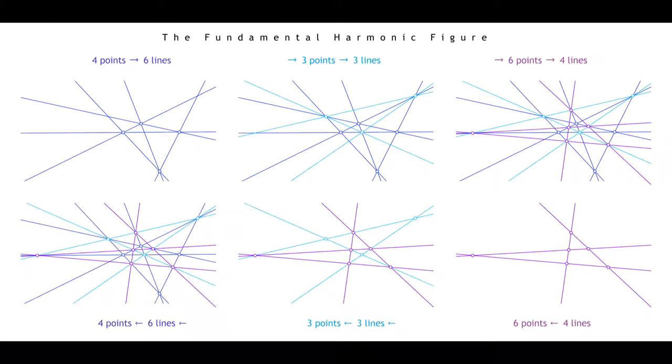This overview of the two constructions just practiced shows that the fundamental harmonic figure is self-polar. It consists of a quadrangle, shown here in blue, a quadrilateral, shown here in purple, and their shared diagonal triangle, shown here in cool blue.